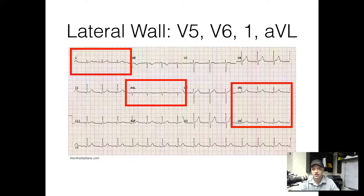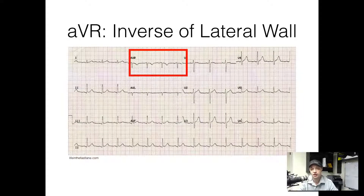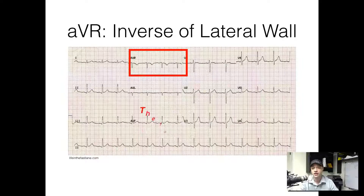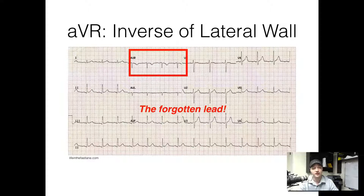We've gone through most of these leads but we still have AVR. So what's AVR? AVR is looking at the inverse of the lateral wall. It might be easier to remember it as negative AVR, because it's a computerized algorithm that looks more at the posterior aspect of the heart. It's the augmented vector right, and it's looking at the inferior and lateral aspect of the heart as well. It's called the forgotten lead because it's not really looked at all that often. It isn't terribly diagnostic, but if you're looking deep into the weeds of the 12-lead, AVR is a good lead to look at — though not terribly clinically significant in the pre-hospital environment a lot of times.